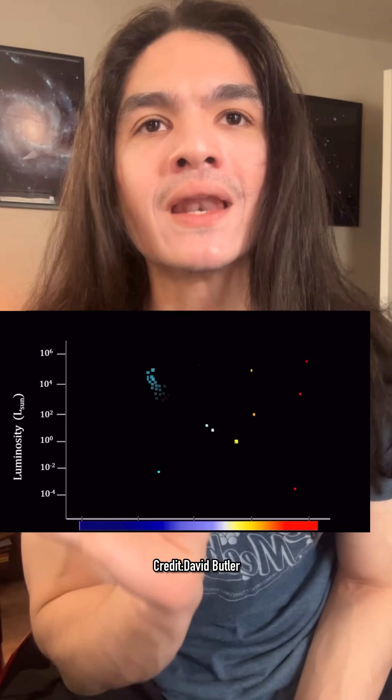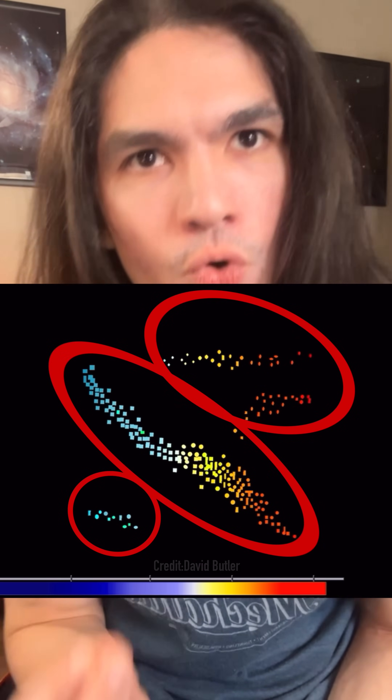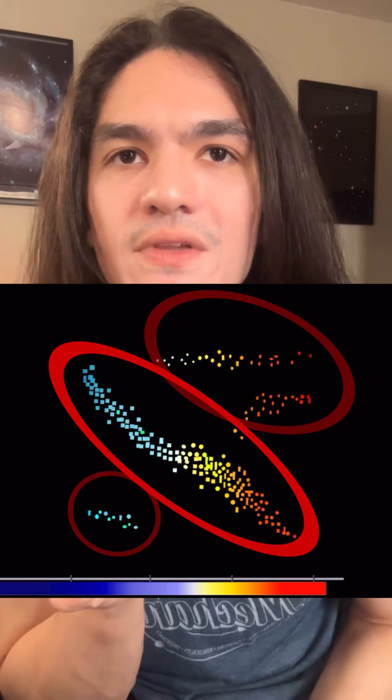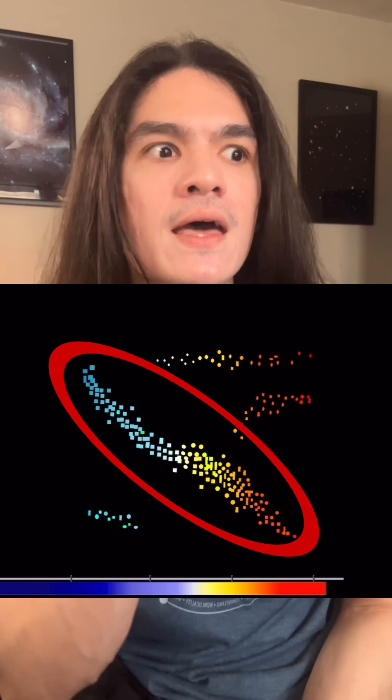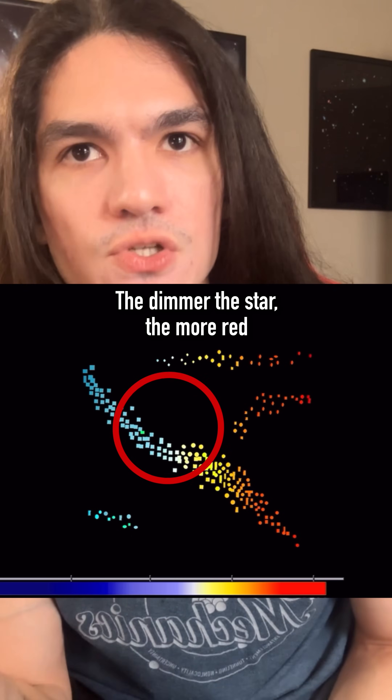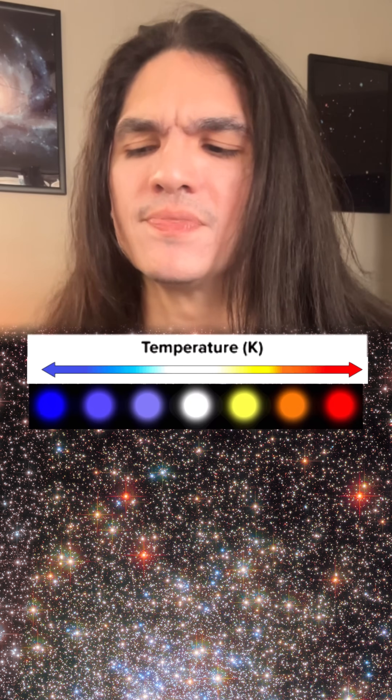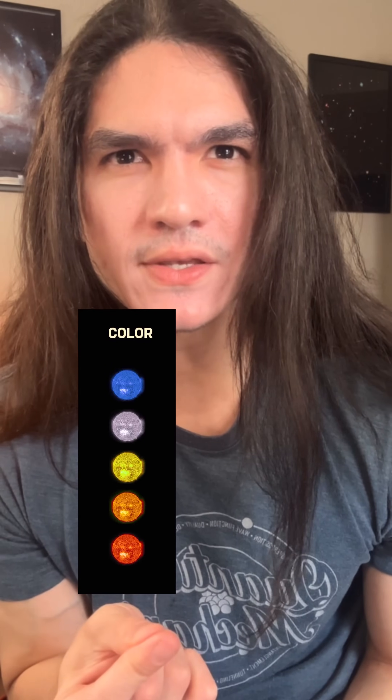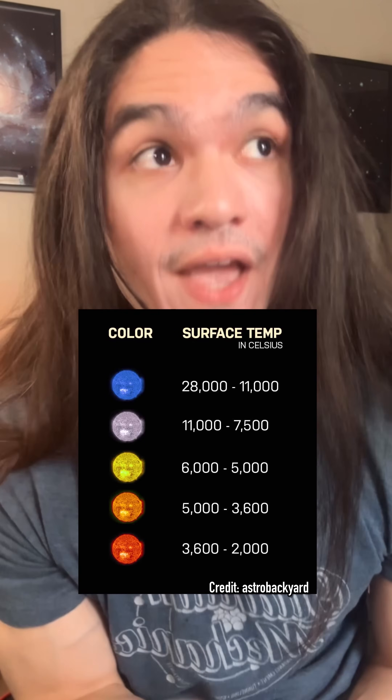What you might have noticed is that stars don't just have any random combination of luminosity and color. Rather, when organized based on those two properties, they fall into very distinct groups. The vast majority of them fall on this roughly diagonal line, telling us that in general the brighter a star is, the bluer it is, and the opposite — the dimmer the star, the more red. As it turns out, a star's color is directly related to its surface temperature.